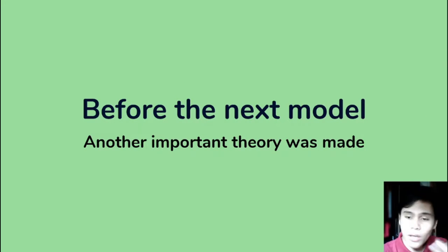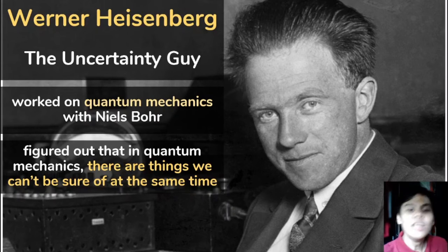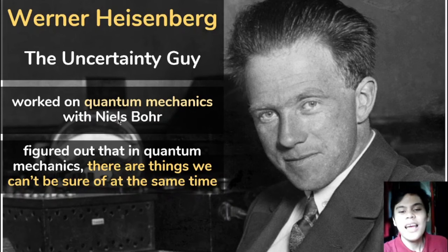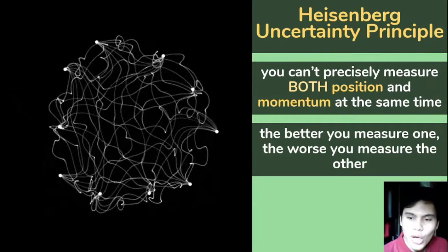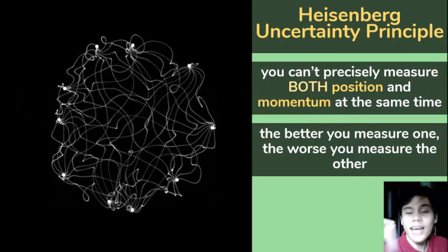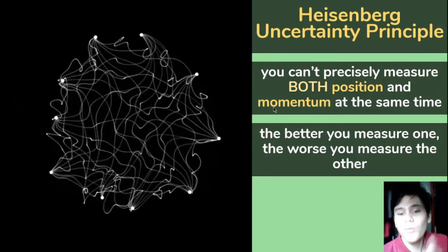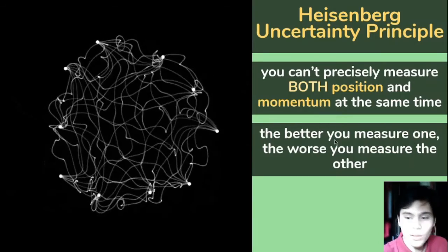An important principle was put forth before the next model — by Heisenberg. He worked on quantum mechanics with Niels Bohr and figured out that we can't measure some things and be sure of them at the same time. This is the uncertainty principle: you can't precisely measure both position and momentum of an electron at the same time, because electrons are too tiny and too fast-moving. If you focus on position, you can't tell its momentum very well. If you focus on momentum, you can't figure out its position very well. The better you measure one, the worse you measure the other.